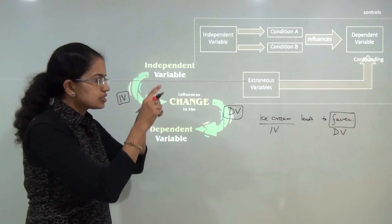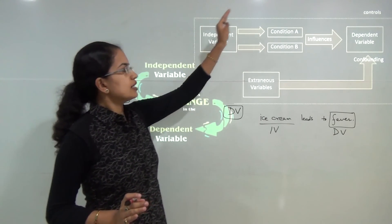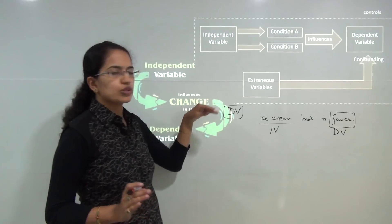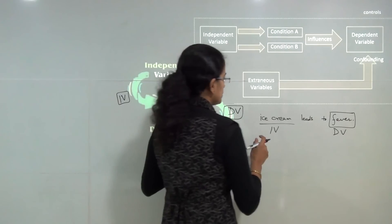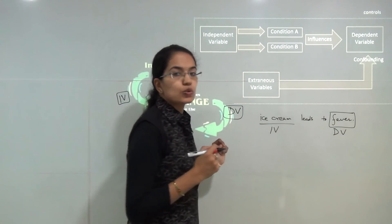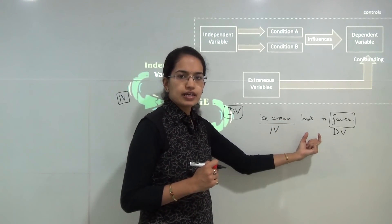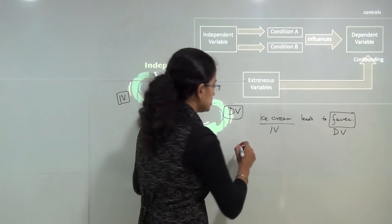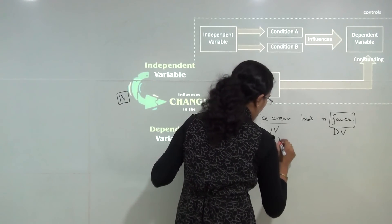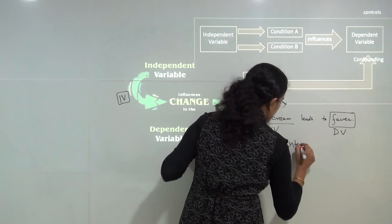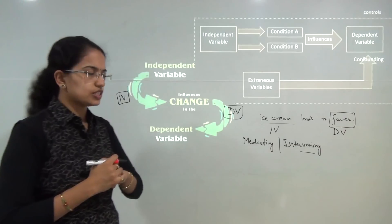However, this whole event is controlled under a certain set, and that is what we call as controls. Within these controls, susceptibility to infection could be one of the mediating or intervening variables. So you have a mediating or intervening variable, and that could be susceptibility to infection.